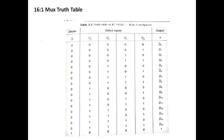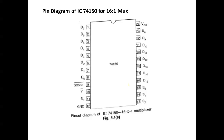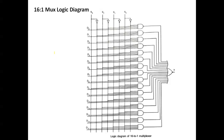For a 16-to-1 MUX: 2^n = 16, so n = 4, meaning 4 select lines S0, S1, S2, S3. The truth table and pin diagram for 16-to-1 is IC 74150. The logic diagram shows select lines and inputs D0 to D15 — a total of 16 inputs and only one output.